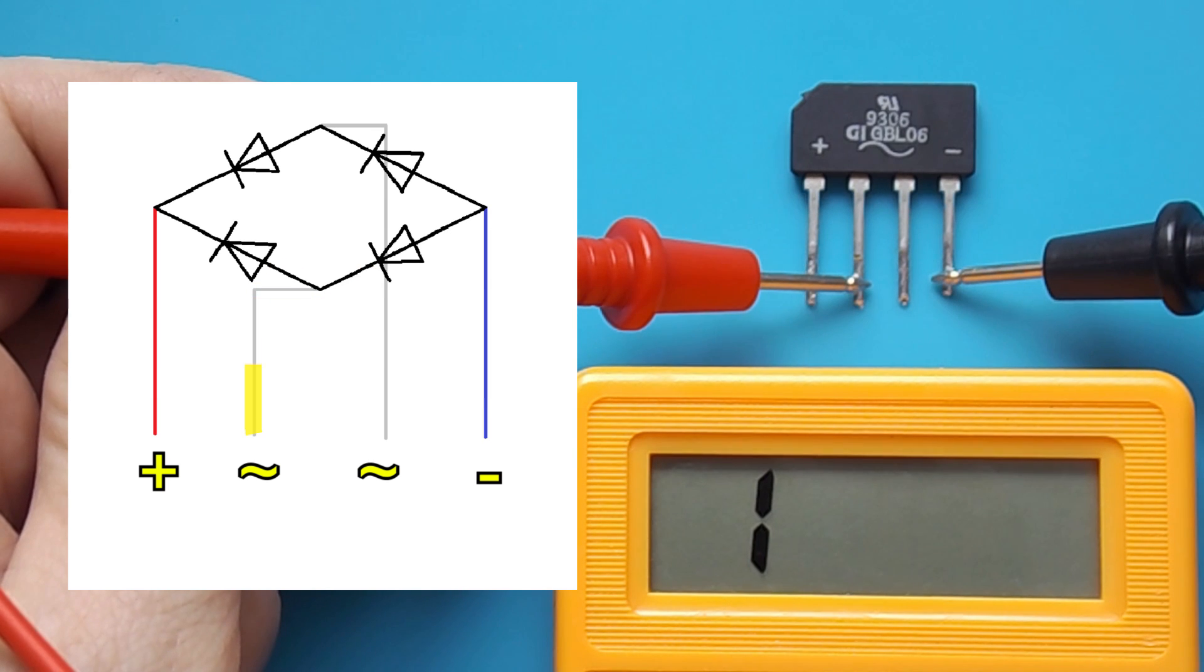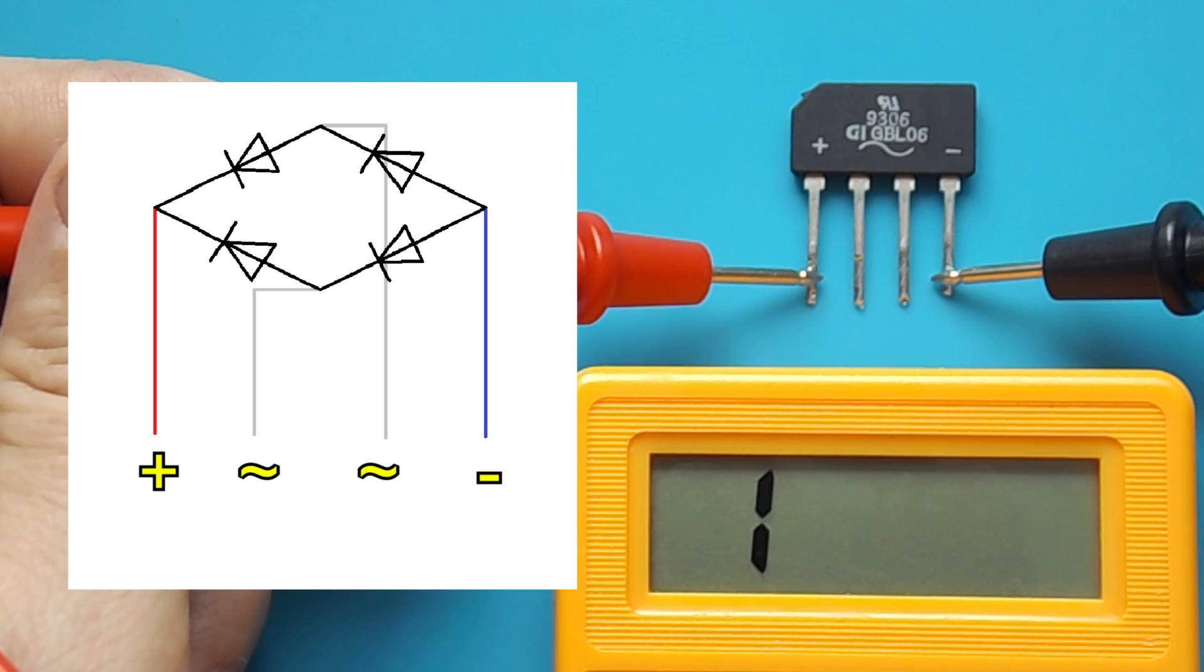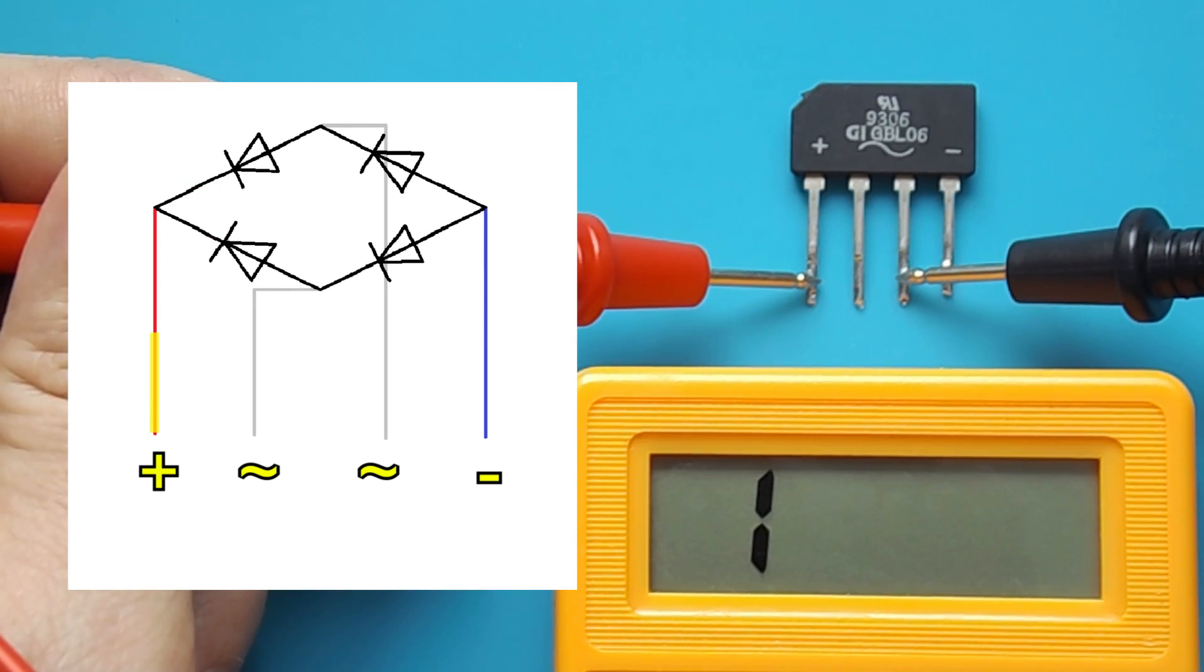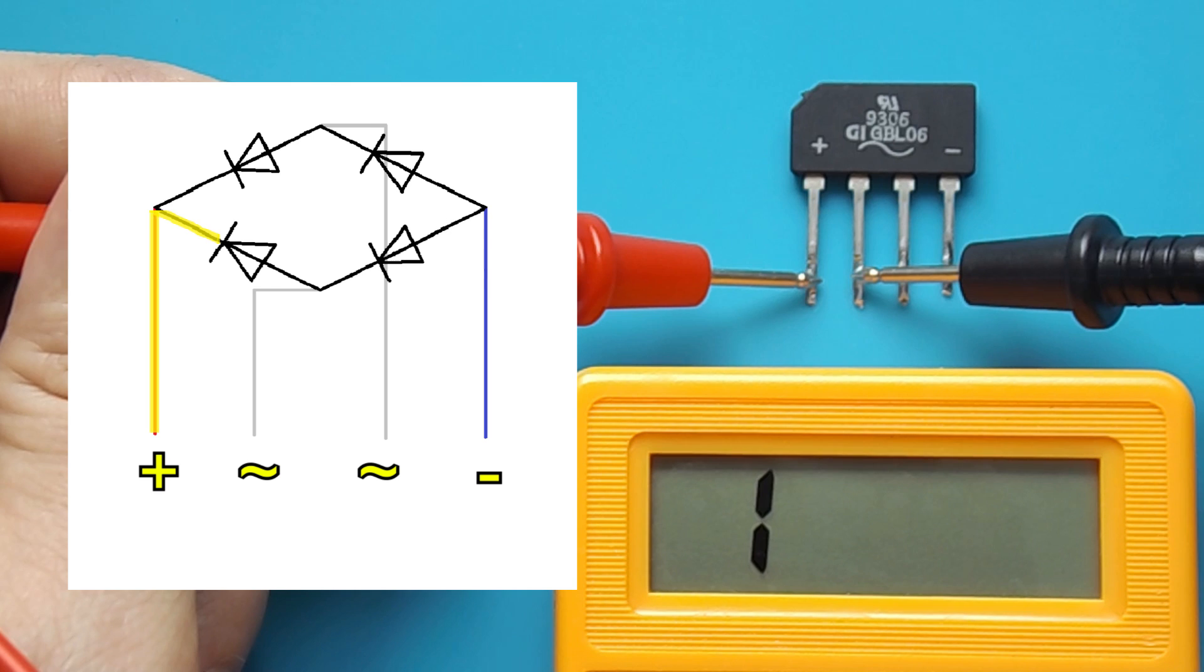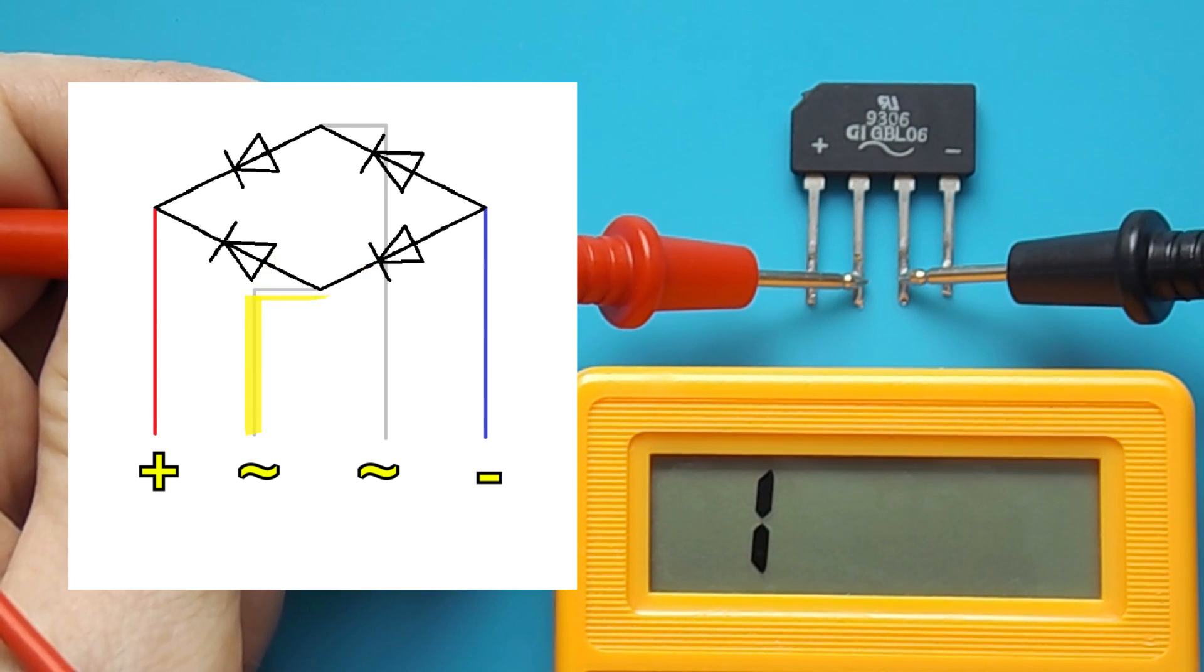Then I check with respect to minus and AC inputs. The multimeter will be silent. Then I look exactly the same with respect to the plus of the AC inputs.